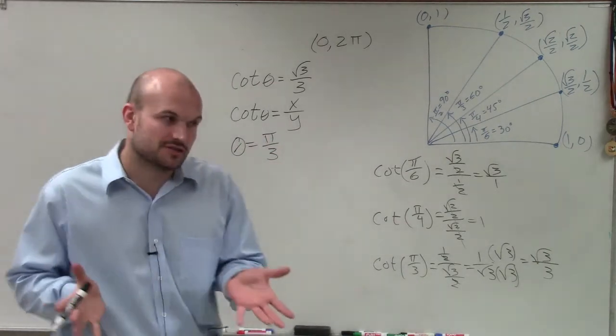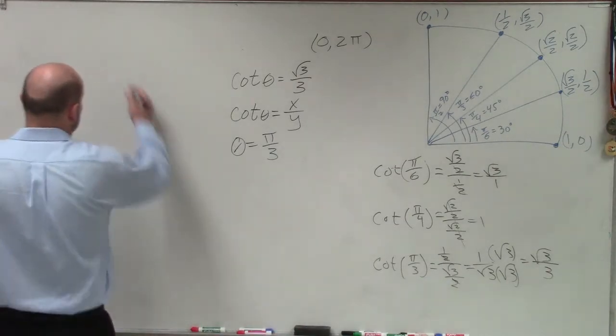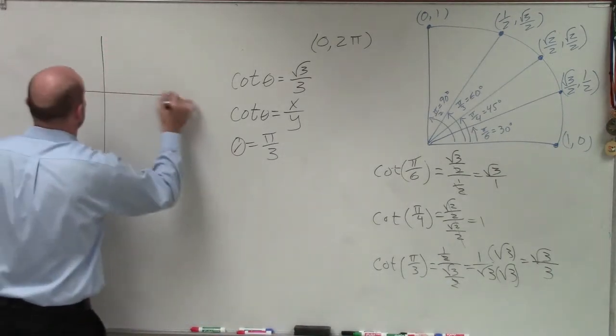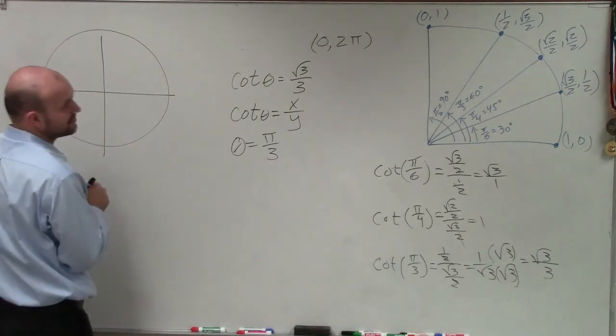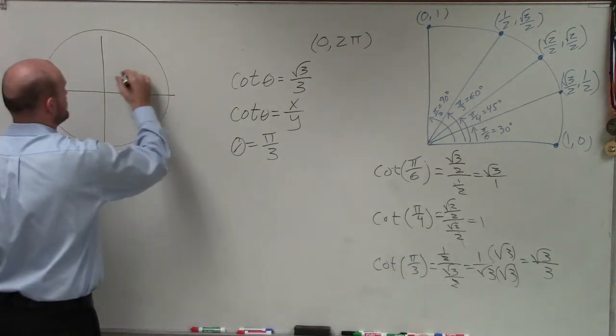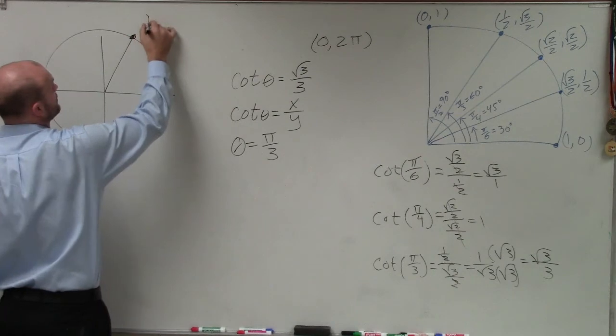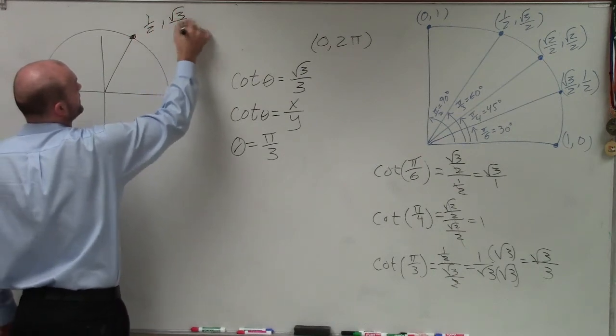But now what I need to do is determine, well, when exactly is pi over 3? Is that the only angle that I'm going to have that? Well, so let's go and take a look at that angle. So again, our point pi thirds, which occurs at 1 half, comma, square root of 3 over 2.